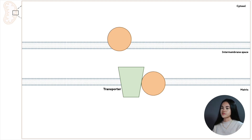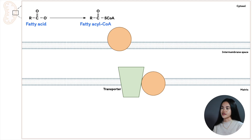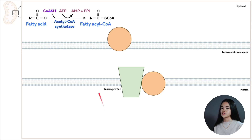The first step is to activate the fatty acid and convert it to a fatty acyl-CoA. This is catalyzed by fatty acyl-CoA synthetase. In this step, we're adding a CoA, and this also requires ATP to activate this step.